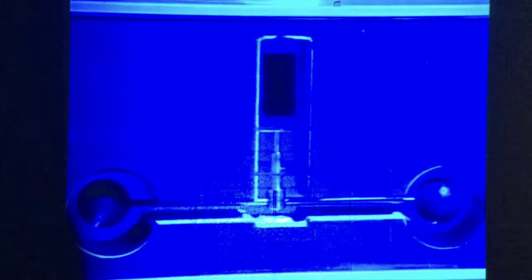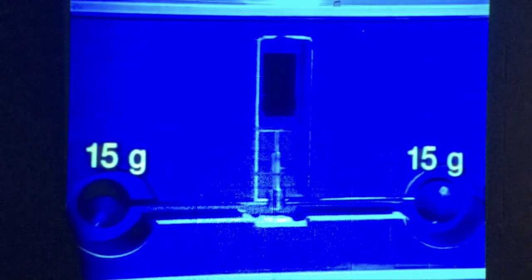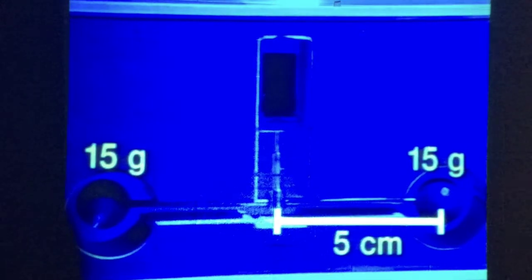Called a torsion balance, this device consists of two equal spherical masses attached to the ends of a lightweight horizontal shaft. A long, thin wire hanging from a central post suspends the shaft at its midpoint.